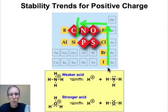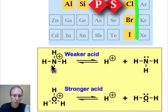These trends can be used to explain chemical behavior, such as the acidity of the ammonium cation compared to the hydronium cation. In the case of ammonium, we have a positively charged nitrogen that's more stable than the positively charged oxygen.